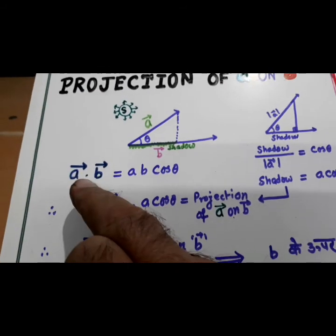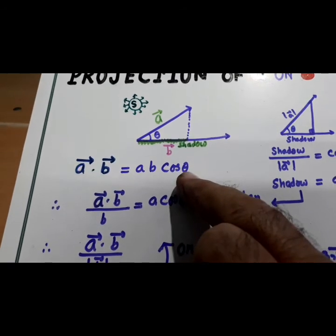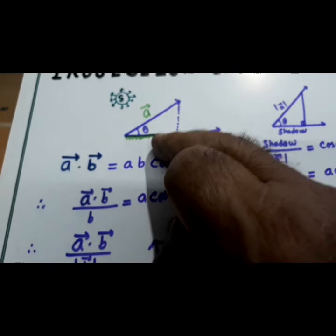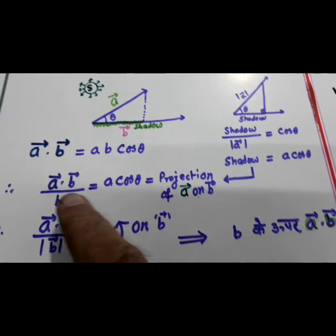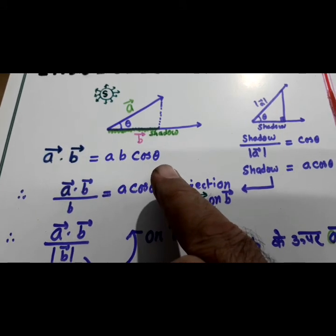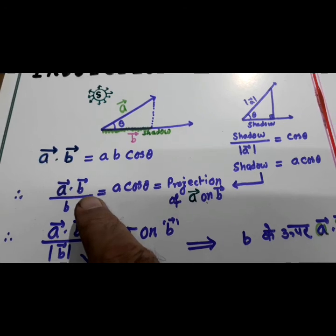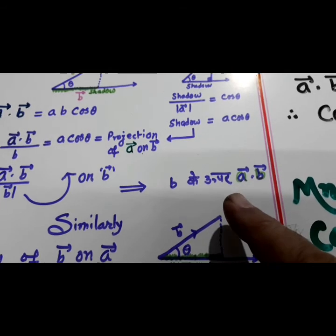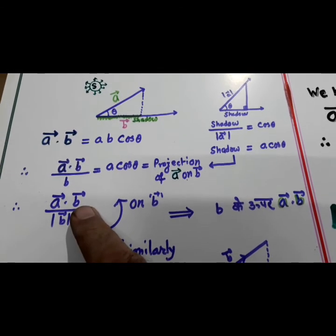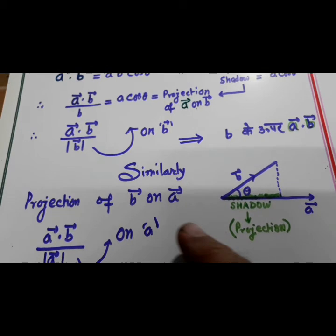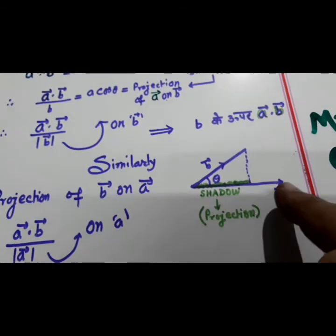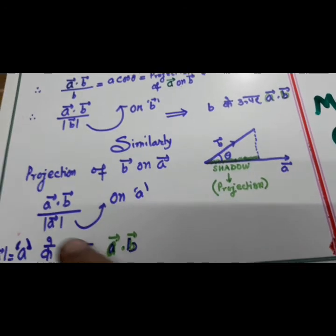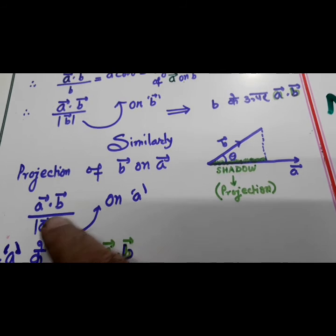So we have to find the projection of a on b. On b. Projection of a on b. Look here. A dot B is equal to a b cos theta. Projection is this. This over this is cos theta. This is cos theta. So projection of a on b is a dot b over b. Similarly, projection of b on a. Shadow of B is forming on A. Projection of b on a is a dot b over a. This is a way you have to remember.